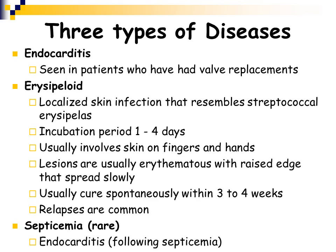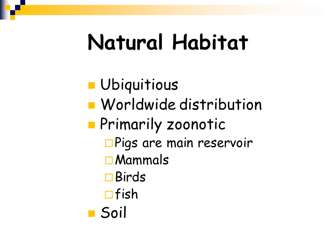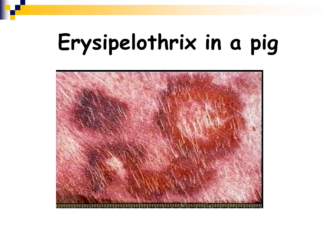The third type of disease Erysipelothrix causes is septicemia, which is the most severe disease, although rare. Usually an endocarditis may develop after a septicemia. Here is a classic erysipeloid on the hands or fingers — you can see a nice erythematous ulcerated skin lesion. Erysipelothrix is ubiquitous and distributed worldwide. It is primarily a zoonotic organism with pigs being the main reservoir. It has also been isolated from mammals, birds, fish, and soil. It even causes cutaneous lesions in infected pigs.